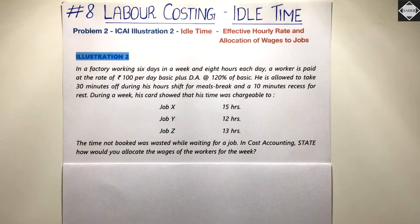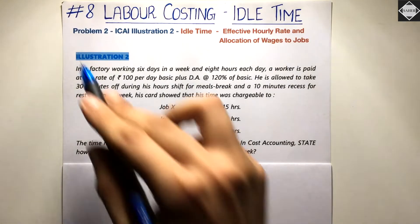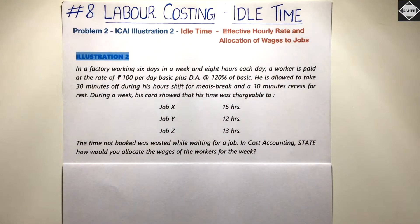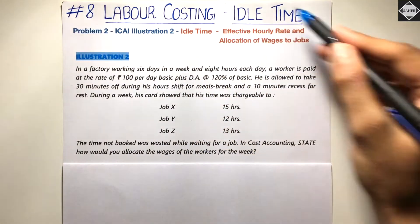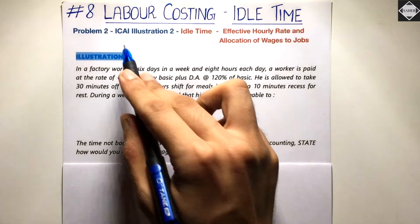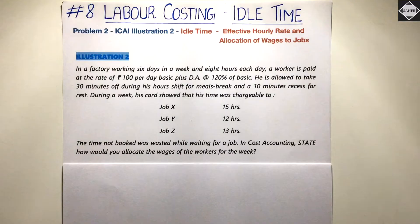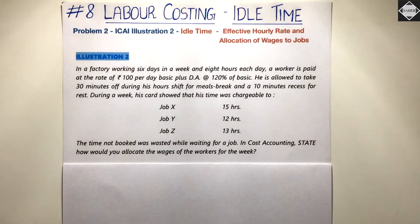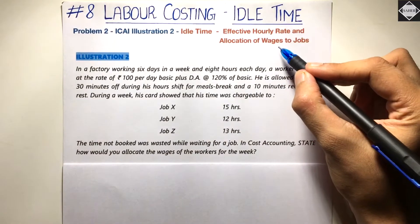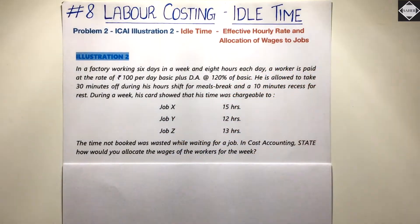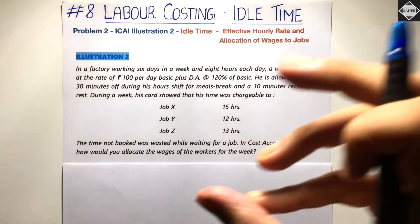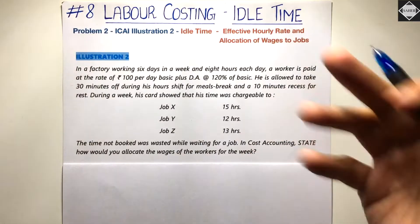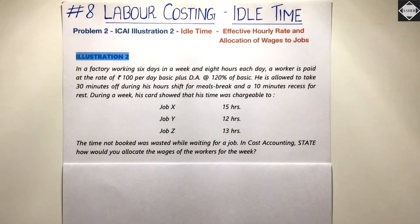Hi everyone, welcome back to Sahab Academy. Today in this eighth video of the labor costing chapter, we are going to solve our second problem of the idle time topic. This question is from the ICAI study material, Illustration 2. Here we have to calculate the effective hourly rate, do the allocation of wages to different jobs, and also treat abnormal idle time.